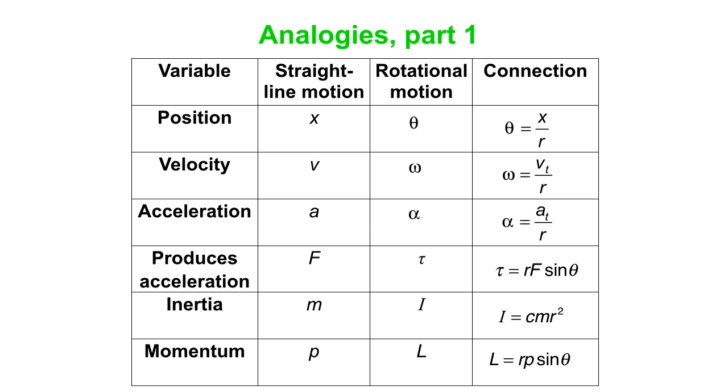And we have equivalent kind of things for rotation. Torque is the rotational equivalent of force. Rotational inertia, the rotational equivalent of mass. And angular momentum is the rotational equivalent of linear momentum. And you can get the torque from the force or the inertia from the mass or the angular momentum from the linear momentum. Those are the equations for those.